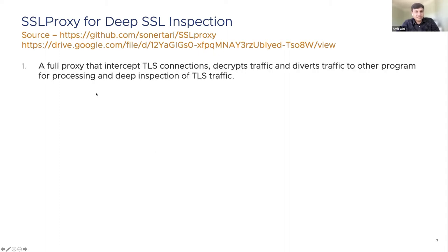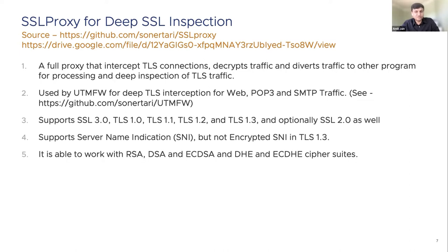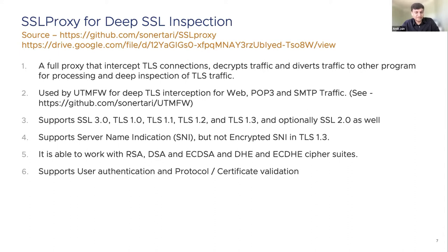SSL proxy is widely used by the UTM firewall project to provide deep TLS interception for web, POP3, and SMTP traffic. It supports many TLS protocol versions including SSL 3.0 and TLS 1.3, supports TLS extensions such as SNI, and works with most cipher suites including RSA, DH, and ECDSA. It also supports advanced features such as user authentication and certificate validation — when it intercepts TLS, it ensures the certificate presented by the backend server is valid, and if found invalid, terminates the TLS proof.